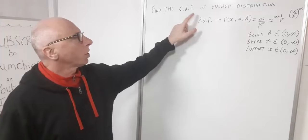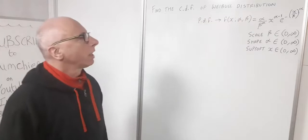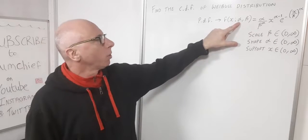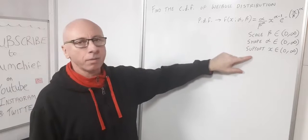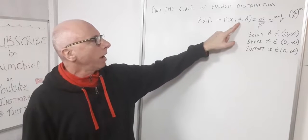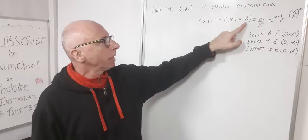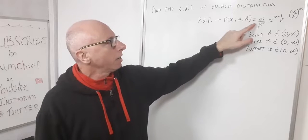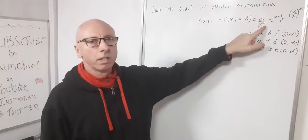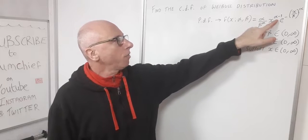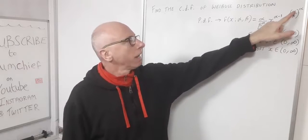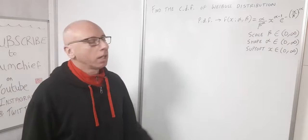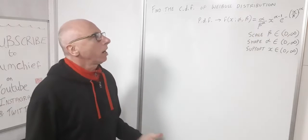In this video we are going to find the cumulative distribution function of the Weibull distribution. The Weibull distribution has this PDF with three controlling variables: x, our random variable from zero to infinity; alpha, the shape parameter; and beta, the scale parameter, both ranging from zero to infinity. The PDF is given by alpha divided by beta to the alpha, times x to the alpha minus one, times e to the minus x over beta to the power of alpha — it looks a lot like a gamma function.